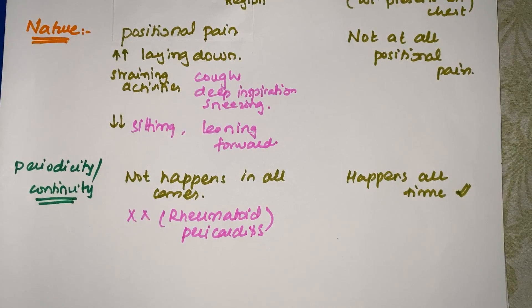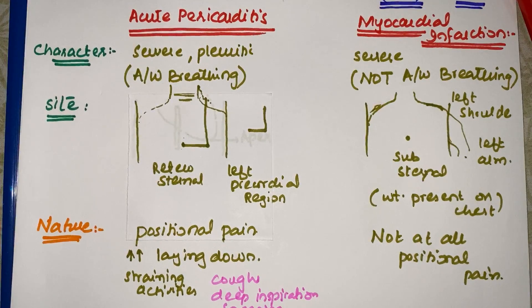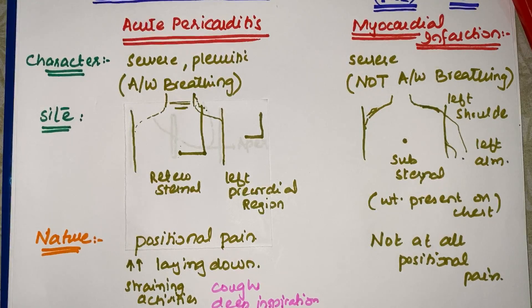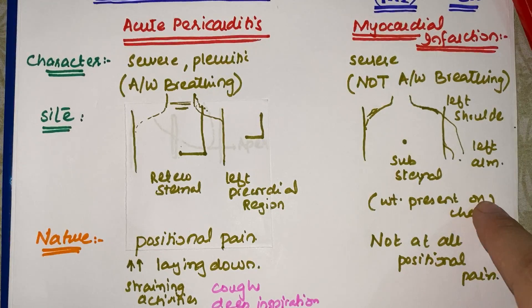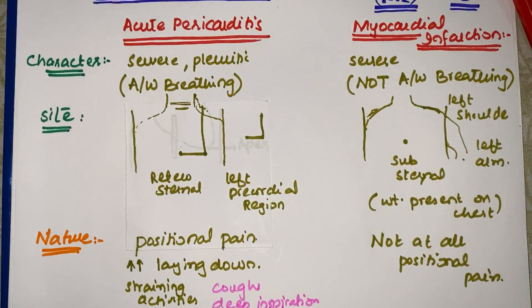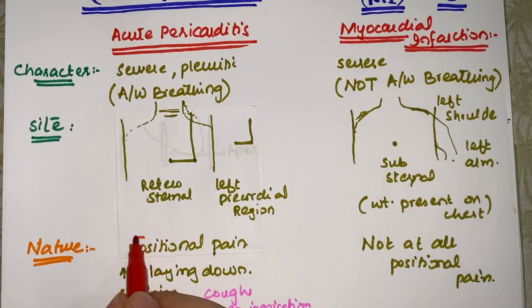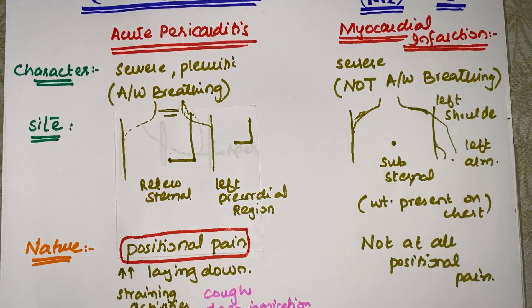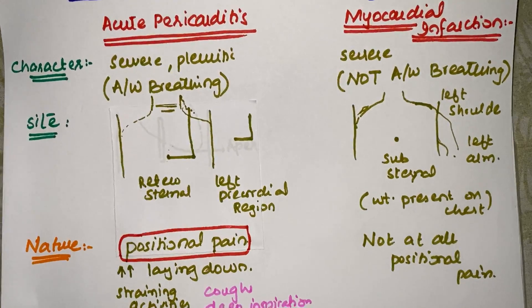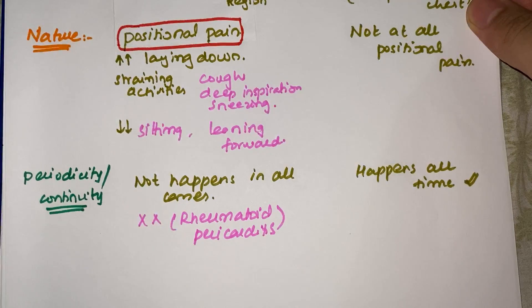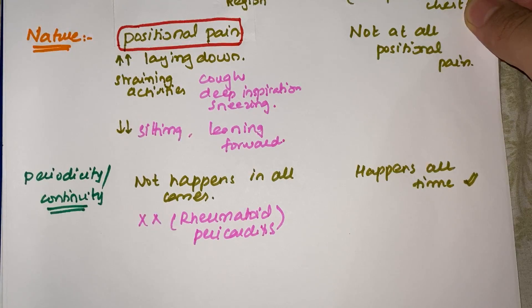A brief summary: acute pericarditis pain is severe and pleuritic — associated with breathing — while MI pain is not associated with breathing. Site of acute pericarditis pain is retrosternal or left precordial, radiating to the trapezius ridge and neck; MI pain is substernal, radiating to the left shoulder and left arm. Nature of pain: acute pericarditis pain is positional — increases when lying down or straining, relieved by sitting or leaning forward — while MI pain is not positional. Continuity: acute pericarditis pain does not occur in all cases (e.g., absent in rheumatoid pericarditis), while MI pain occurs in almost all patients.